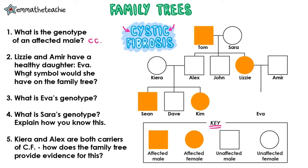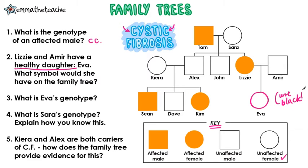Lizzie and Amir have a healthy daughter, Eva. What symbol would she have on the family tree? The key here is she is a healthy daughter, so we're looking for an unaffected female. So we're going to give her a blank circle — and if you can, use black.